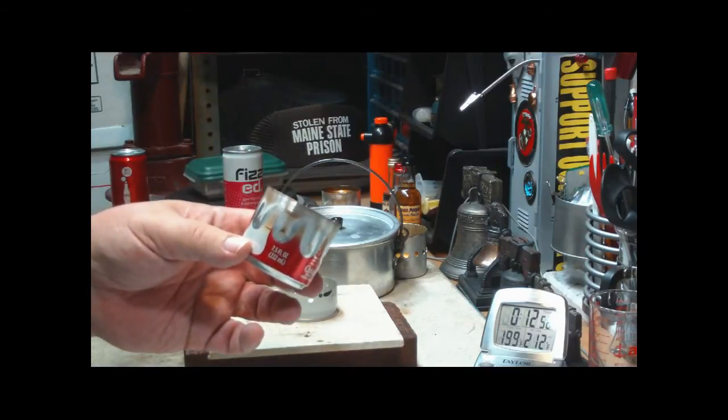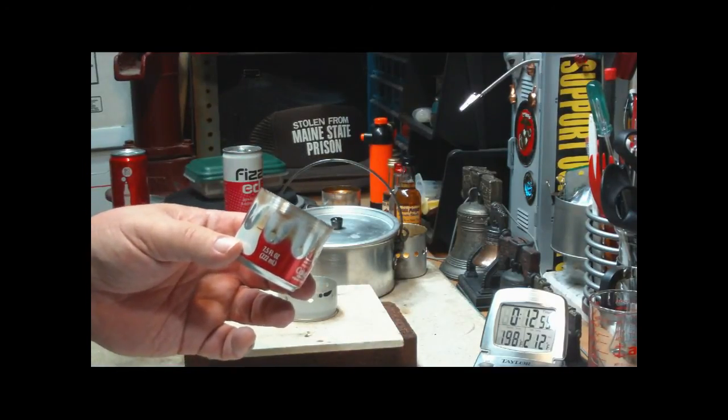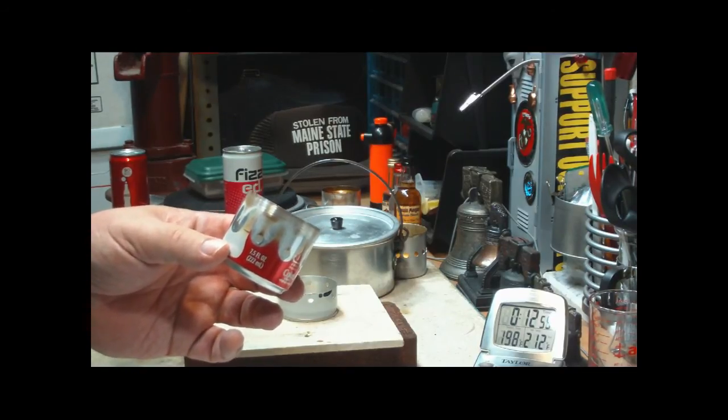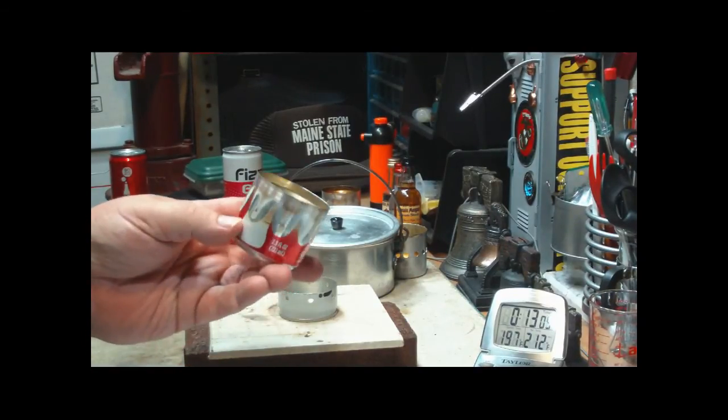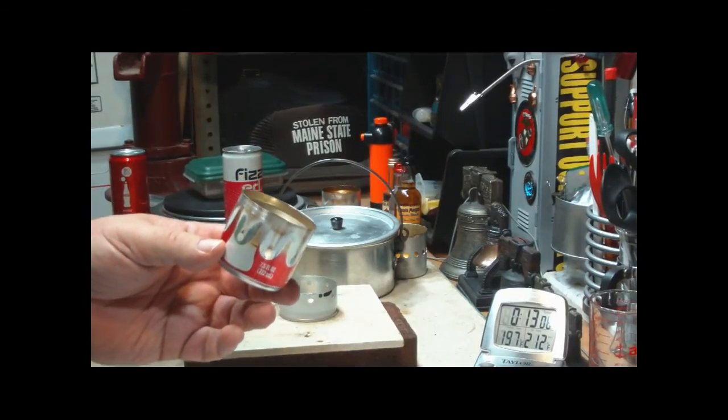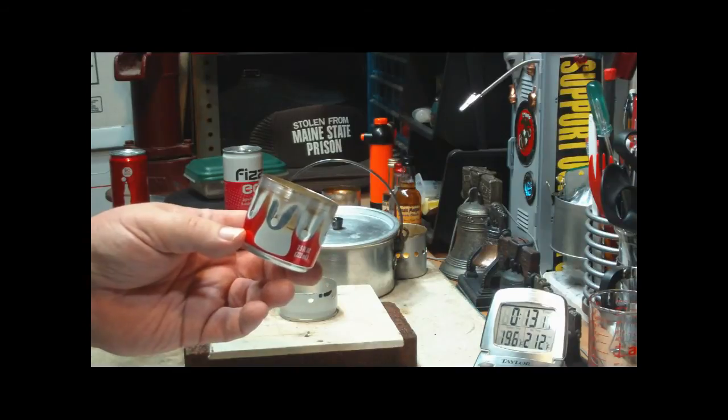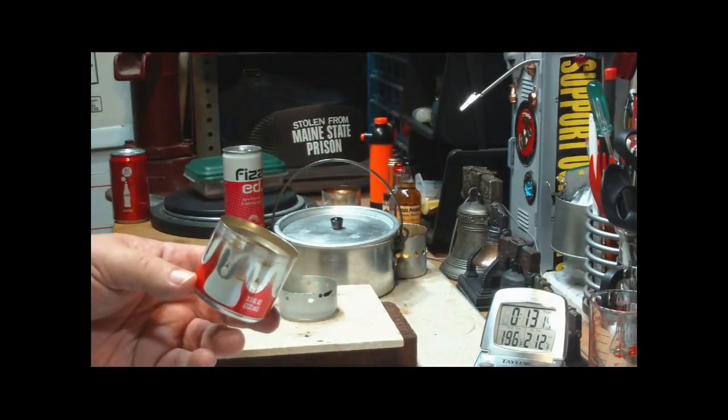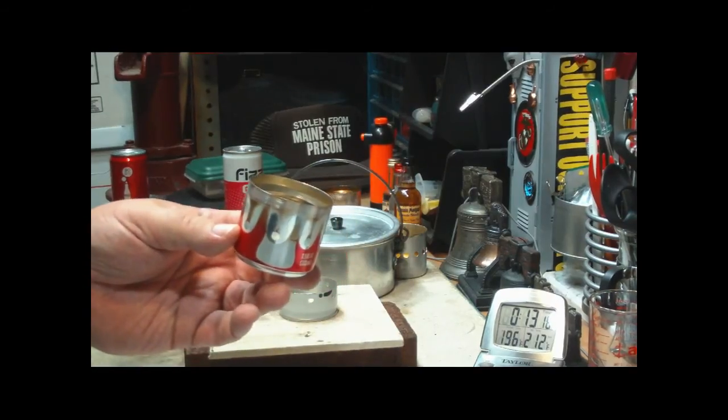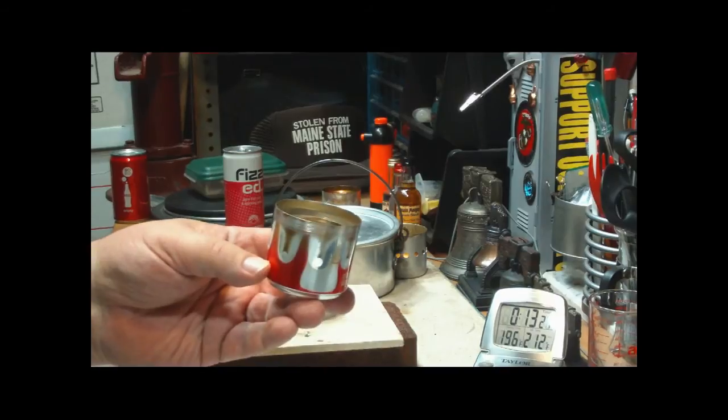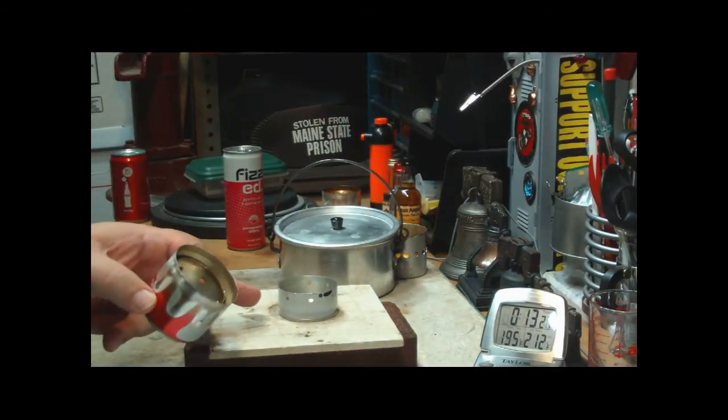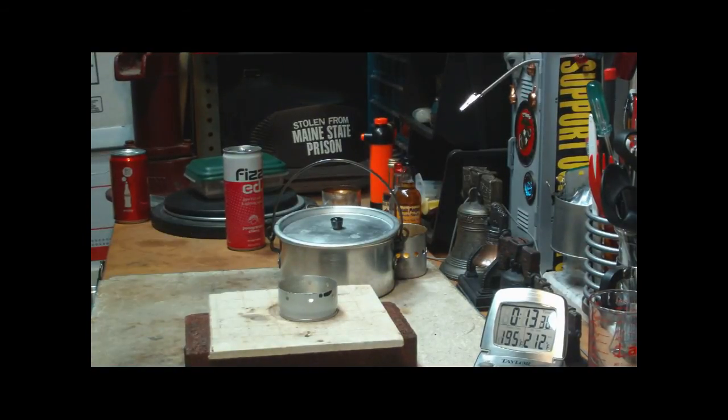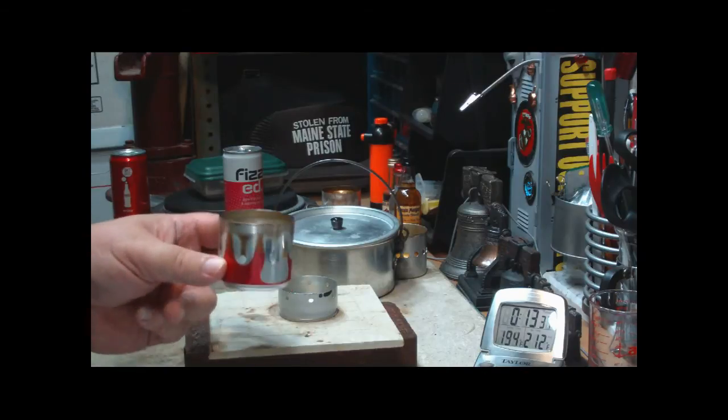When I did it with this one, the Axe can, with eight three sixteenths holes which is a sixteenth larger, this brought two cups of water to boil in six minutes and fifty-two seconds. So seven minutes for eight smaller holes versus six fifty-two, that's almost the same time. Hmm. So, interesting.